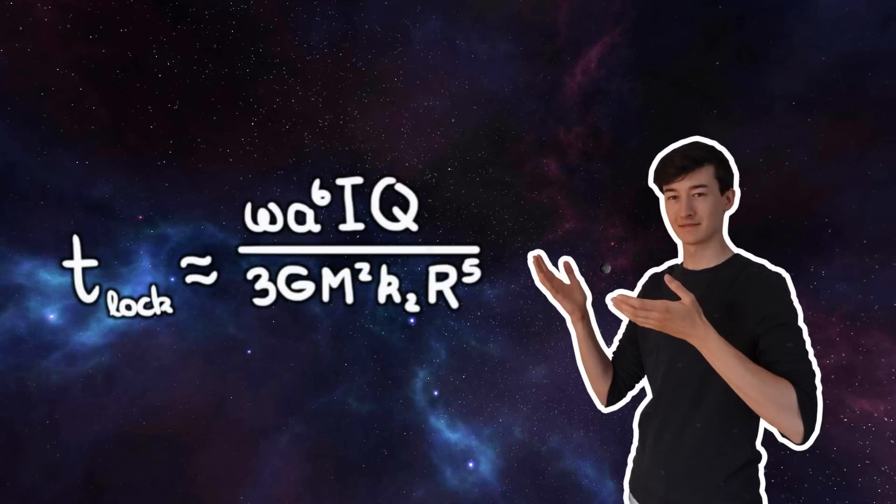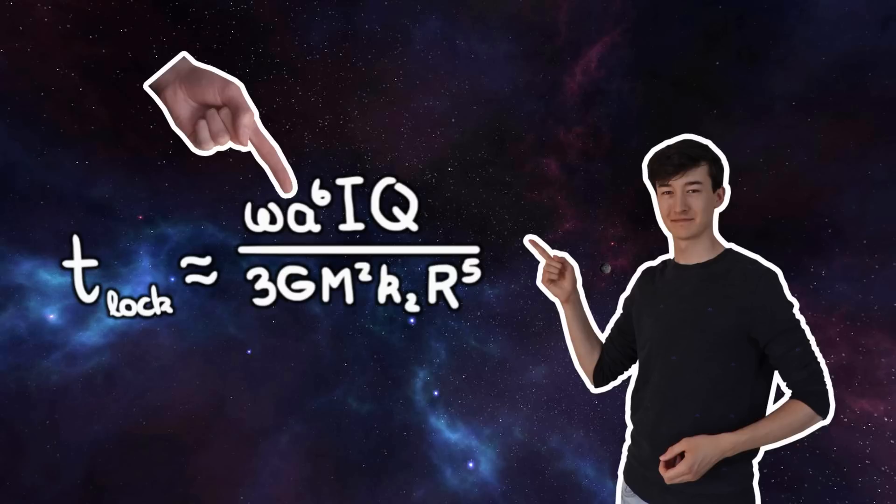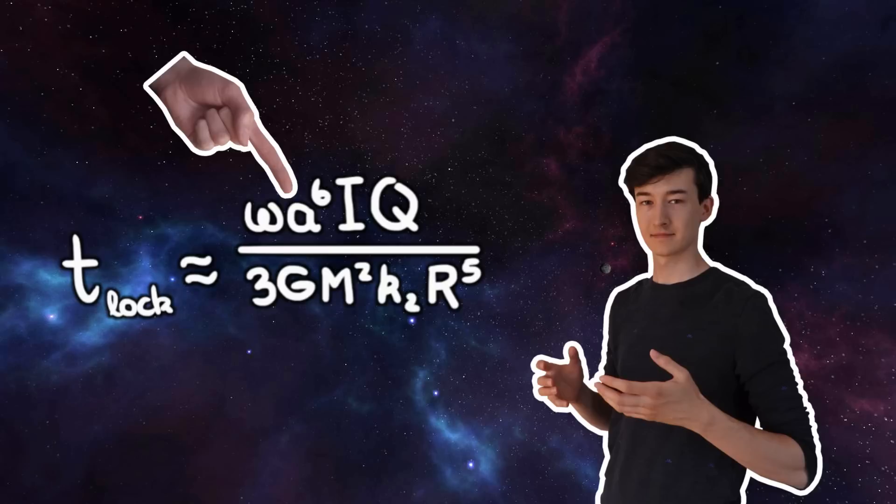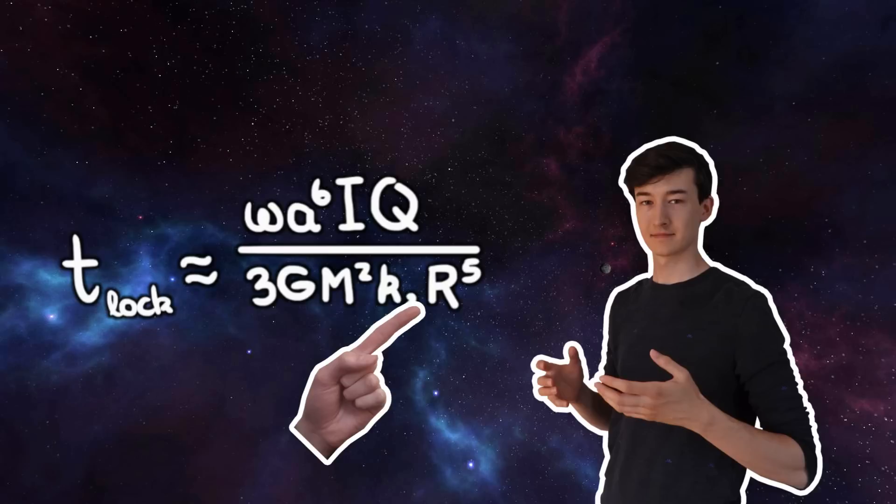When you look at this equation, it does not take much time to realize that it strongly depends on the distance between the two objects. If you double the distance, you multiply the timescale by 64. So the point is that knowing the semi-major axis, and I guess the radius of the body, is the most important. And the rest is just a bonus.